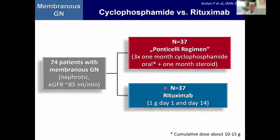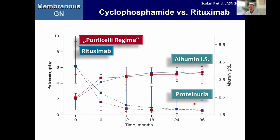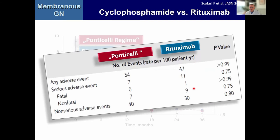A very interesting study was published after the guideline stopped including trials. It's out of Italy, where the Ponticelli regimen with alternating monthly cyclophosphamide and steroids for six months was compared versus rituximab. The outcome was no difference — whatever you look at, albumin and proteinuria run essentially in parallel. Adverse events also did not differ. So for many countries where rituximab is an issue, even though there are biosimilars now, the good old Ponticelli regimen still does as well in every aspect — efficacy and safety.